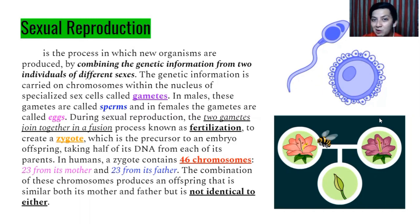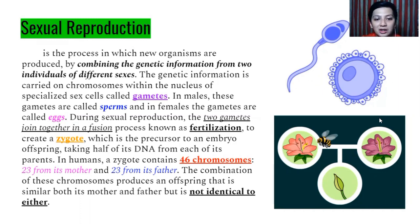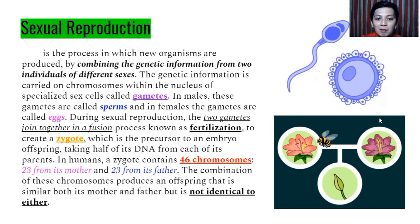Gametes, germ cells, and sex cells — they are all the same. In males, these gametes are called sperms, and in females, these gametes are called eggs. During sexual reproduction, the two gametes join together in a fusion. The process is known as fertilization, to create the zygote, which is the precursor to an embryo — the offspring takes half of its DNA from each of its parents.